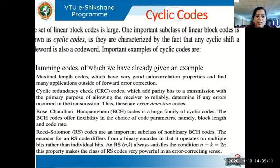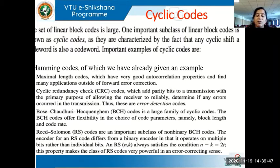Other than that, we have improved versions of cyclic codes known as BCH codes — Bose, Chaudhary, Hockingham codes. These are a large family of cyclic codes offering flexibility in the choice of code parameters like block length and code rate, and are commonly used in satellite communication. We also have Reed-Solomon (RS) codes, which are a subclass of non-binary BCH codes. The RS encoder operates on multiple bits rather than individual bits at a time, and always satisfies the condition n minus k equals 2t, making RS codes very powerful for error correction.